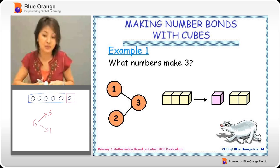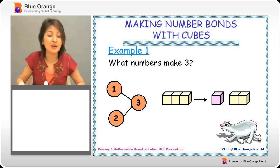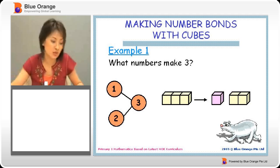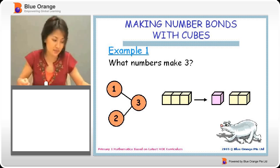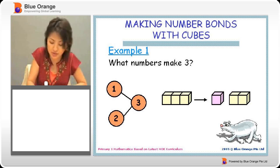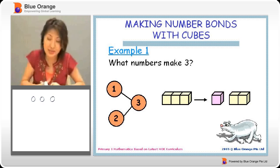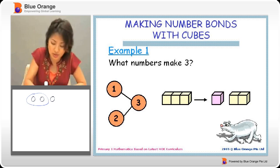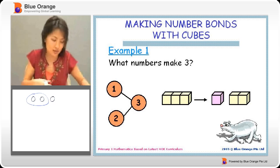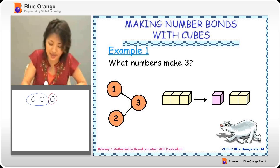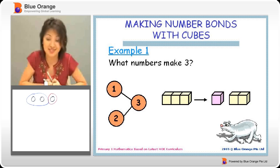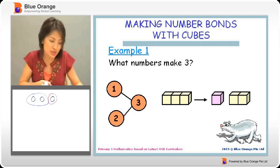Let's take a look at an example. What numbers make three? So, let's have three. One, two, three. So, what we can do is that we can split the three into a group like that and a group like that. Two groups. And the number bonds will be written like that.